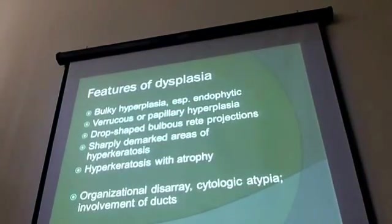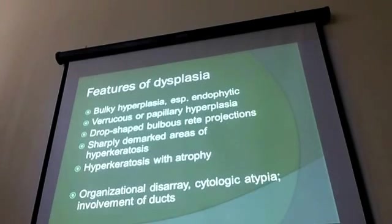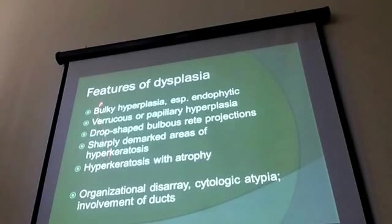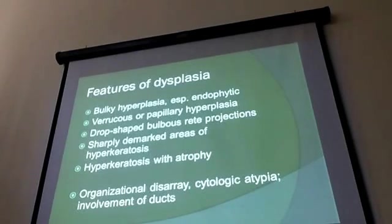The grading and identification of dysplasia in the oral mucosa are a critical step. This is based on our usual criteria — cytology and so forth. But there are particular architectural features where we're more likely to find dysplasia, and I want to review those with you. These findings should alert you to look more closely for cytologic atypia, irregular maturation, organizational disarray, or potentially involvement of salivary ducts or other structures indicative of dysplasia.